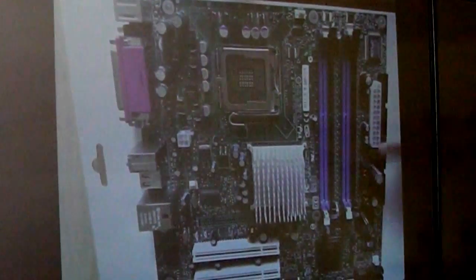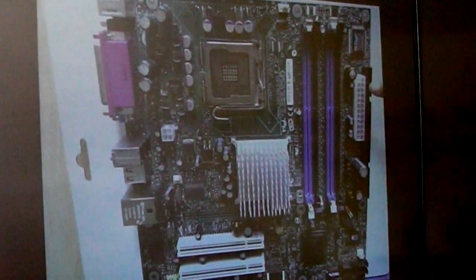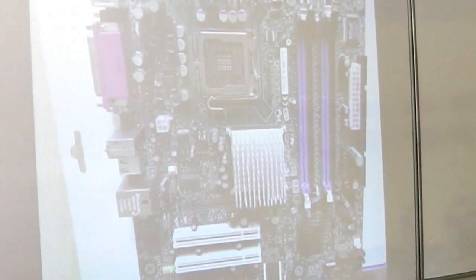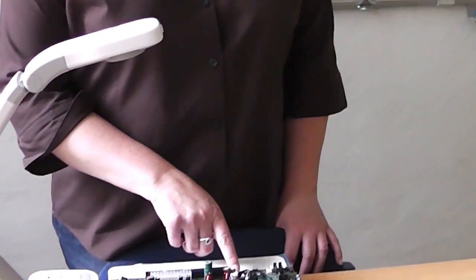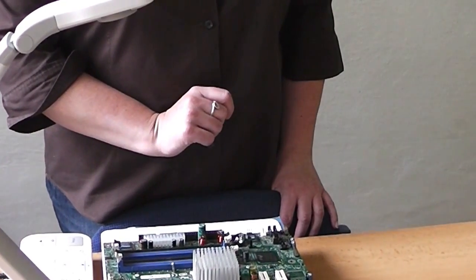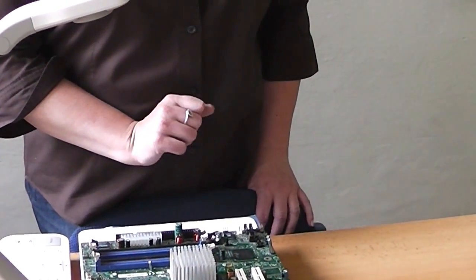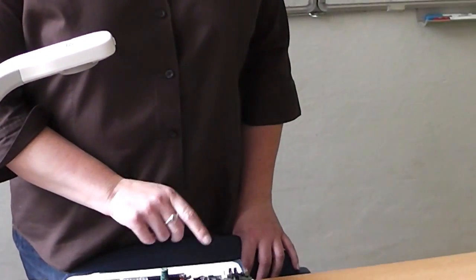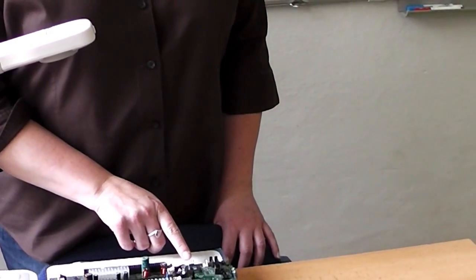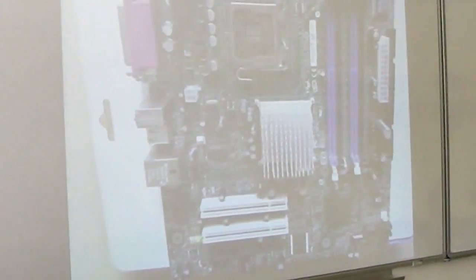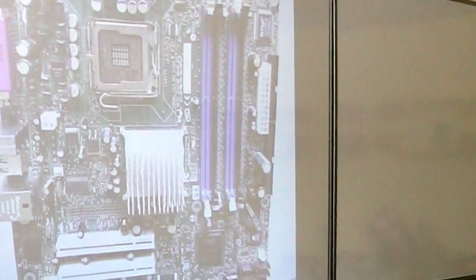Power connector — through which the motherboard gets its power. The place for the battery: the battery keeps the BIOS data and settings and time. And some ports which are used to connect input and output devices.